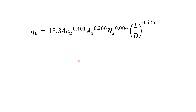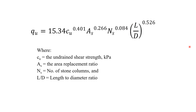The equation developed by Fatah et al. gives the ultimate bearing capacity as: 15.34 × Cu^0.401 × As^0.266 × Ns^0.084 × (L/D)^[exponent], where Cu is the undrained cohesion, As is the area replacement ratio, Ns is the number of stone columns, and L/D is the length-to-diameter ratio. This concludes today's topic.